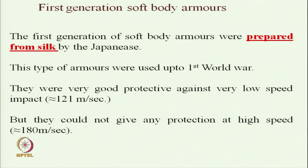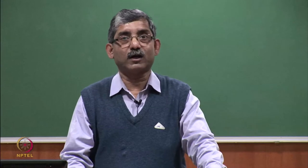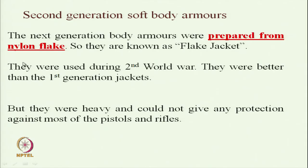Then people started thinking of the next generation body armour. The next generation was prepared from nylon flak which is inserted inside the jacket — known as the flak jacket — used during the Second World War. They were better than first generation because the flak was able to both reduce the velocity of the impactor and dissipate the energy. The main disadvantage was they were heavy and could not give protection against most pistols and rifles.